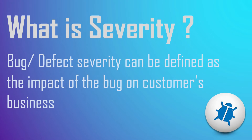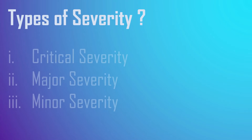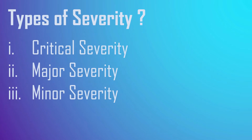What is severity? Severity can be defined as the impact of the bug on the customer's business — in simple words, how big an impact a defect has on the system. Types of severity: critical, major, and minor. Critical severity is an issue where a large part of the functionality or major system component is completely broken and there is no workaround to move forward. For example, due to a bug in one module you cannot test the other modules because that bug blocks them.